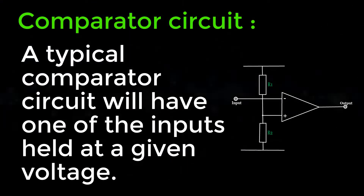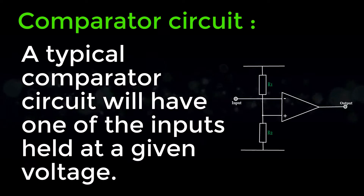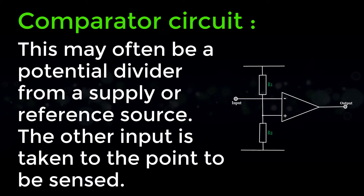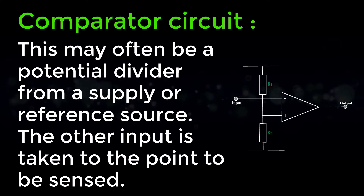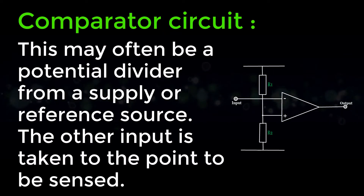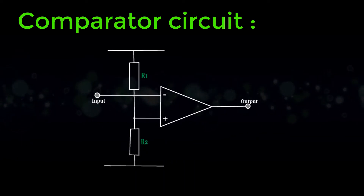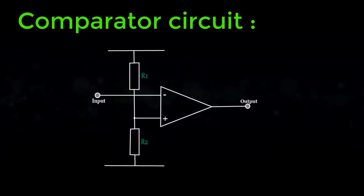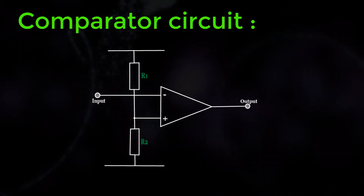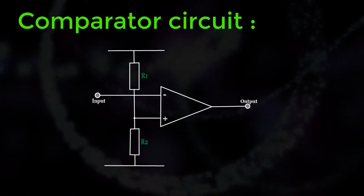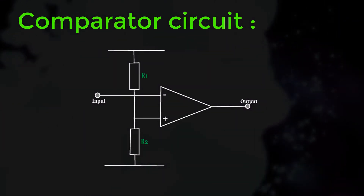A typical comparator circuit has one of the inputs held at a given voltage. This may often be a potential divider from a supply or reference source. The other input is taken to the point to be sensed. Within this circuit, the resistors R1 and R2 form a potential divider between the two voltage rails. The voltage at the junction of the two resistors is the switching voltage for the circuit.